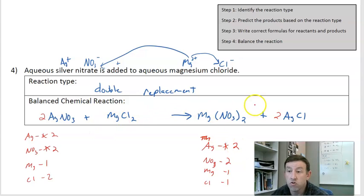Two silver, two silver, two nitrate, two nitrate, one magnesium, one magnesium, two chlorides. Oh, forgot to fix that guy. I put in a two there, that also gave me my two chlorides balanced.